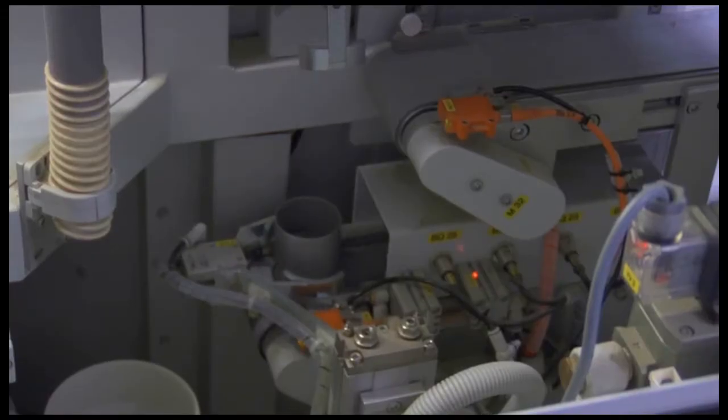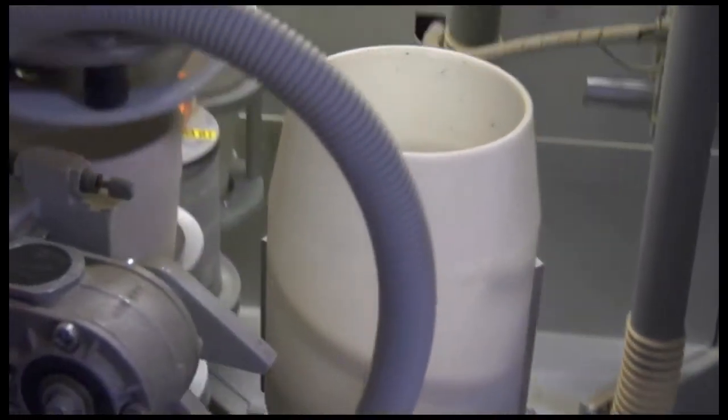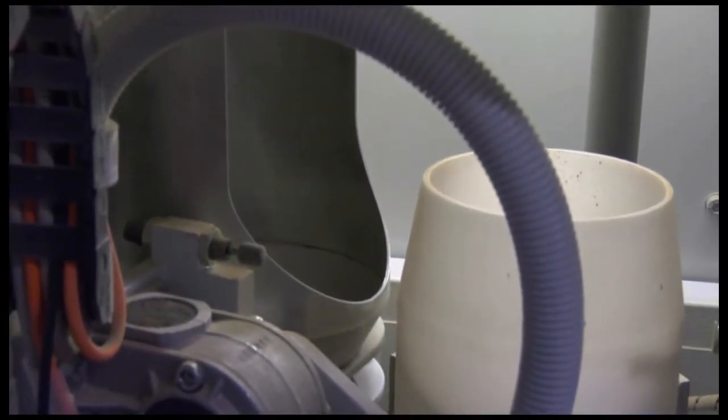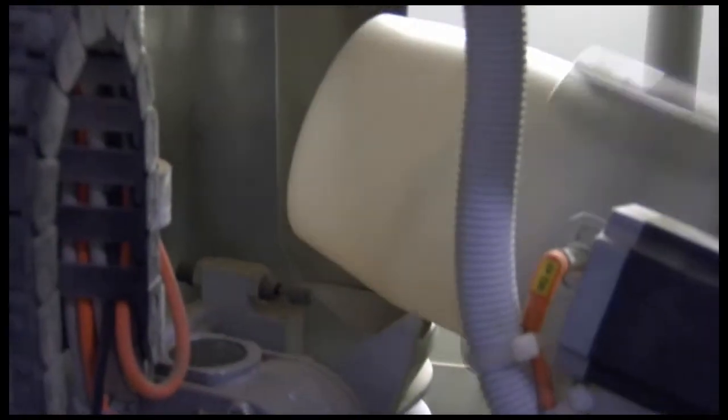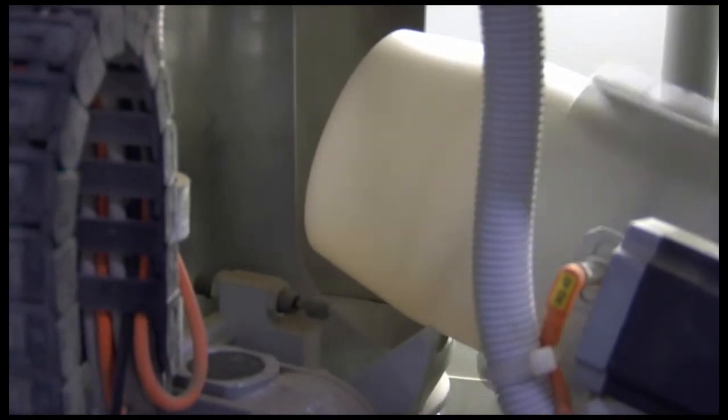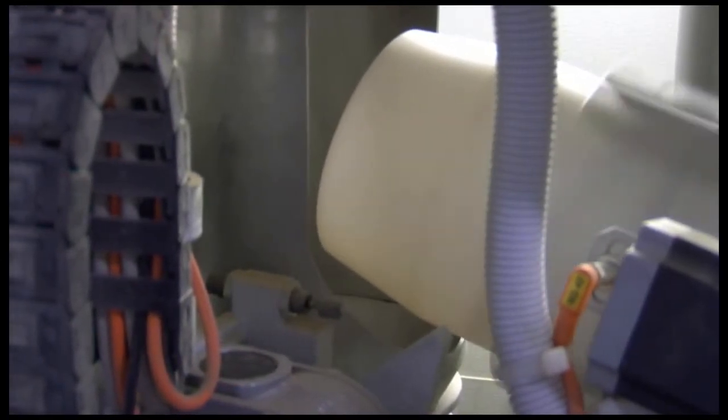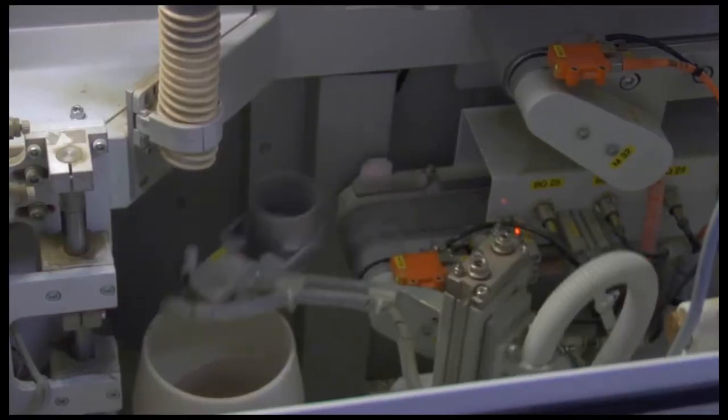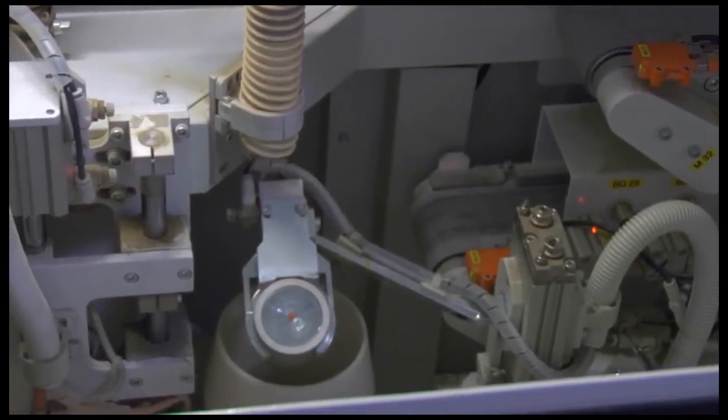In the fire assay doser, sample aliquots and fluxes are dosed in an enclosed environment, in order to get optimal, constant and stable sample mixes ready in the ceramic crucibles for fire assay. The lead dust from the flux is extracted in the machine.